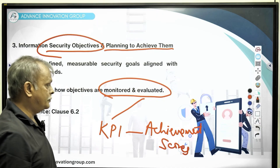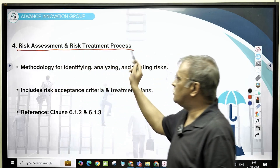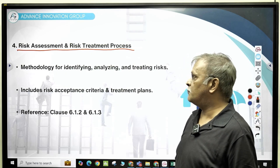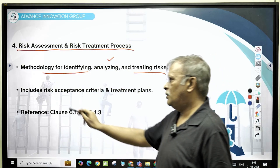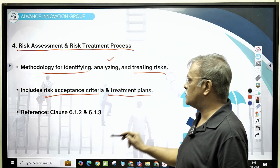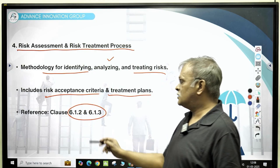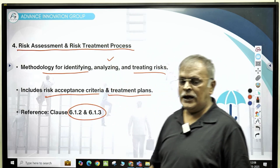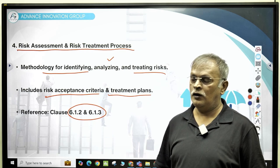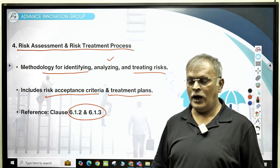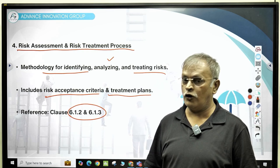The next mandatory document from ISO 27001 covers risk treatment and the risk assessment process — right from the methodology of identifying, analyzing, and treating risks, including your risk acceptance criteria and risk treatment plans. Refer to the details in clauses 6.1.2, 6.1.3, and some clauses of clause 8. Information security has a strong focus on risk management, so this is a very important set of documents.